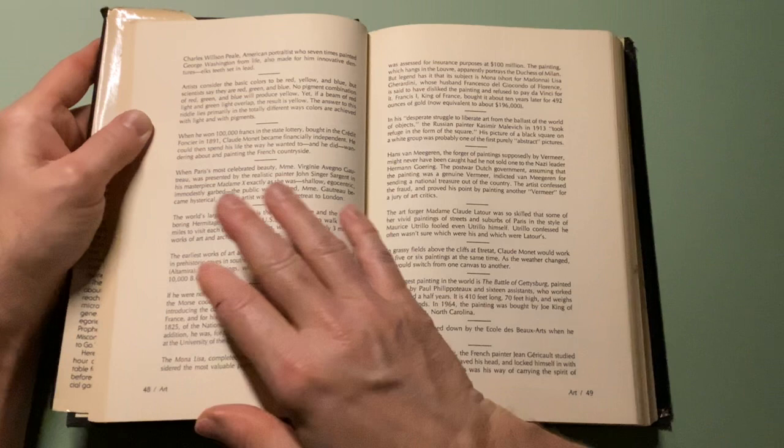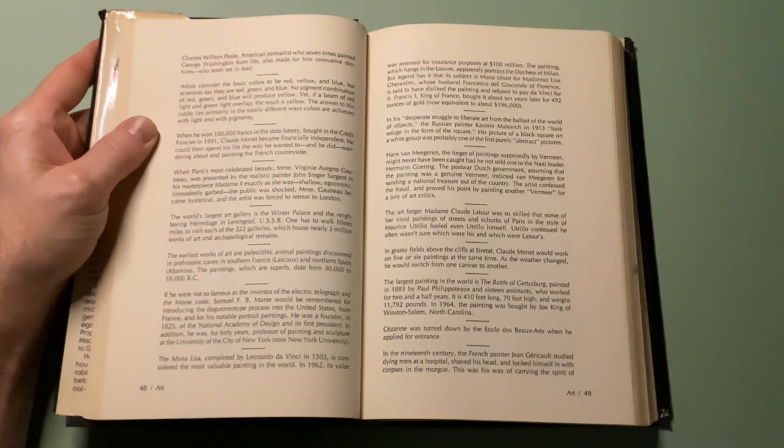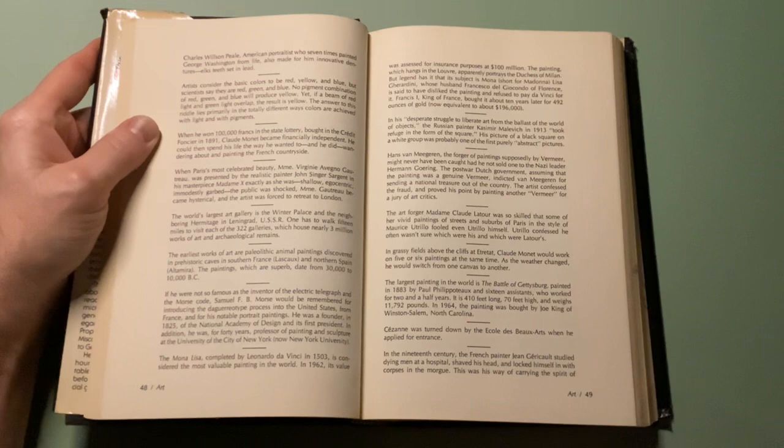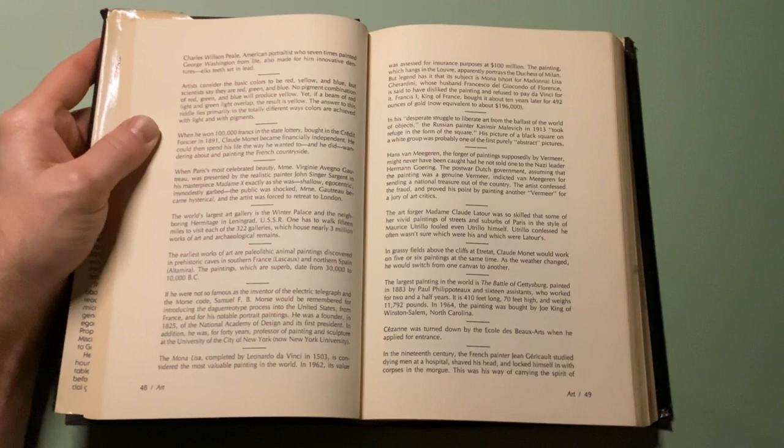In his desperate struggle to liberate art from the tyranny of the world of objects, the Russian painter Kazimir Malevich in 1913 took refuge in the form of the square. His picture of a black square on white ground was probably one of the first purely abstract paintings.